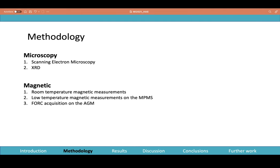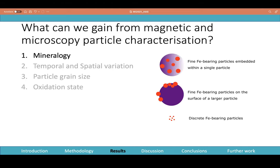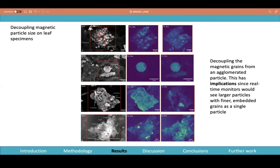The results: basically the aim was what can we get from a combination of these magnetic and microscopy measurements. As you can see in the schematic, the Fe-bearing particles, the ones we were interested in, were either present as discrete particles, or they were embedded on the surface of other larger particles, or they were embedded within carbonaceous particles or mineral dust particles.